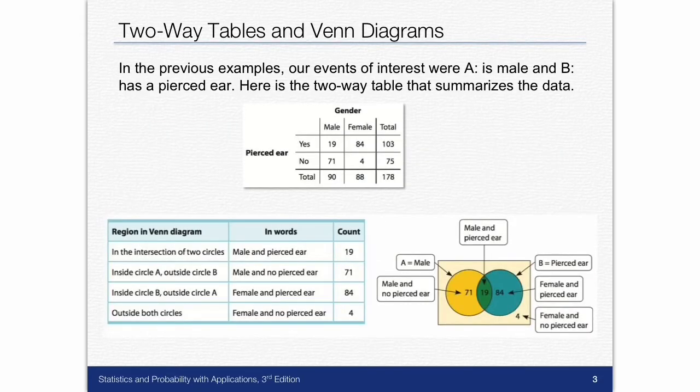In the previous example, our events of interest were A is male, B has pierced ears. So here's a two-way table that describes or summarizes this data. A is male, not A is then female. B is pierced ears, and not B is not pierced ears.